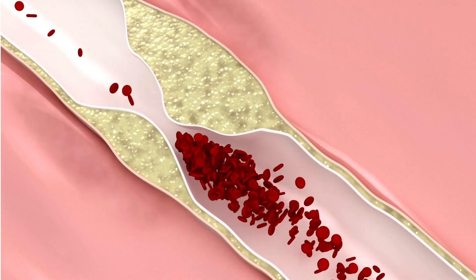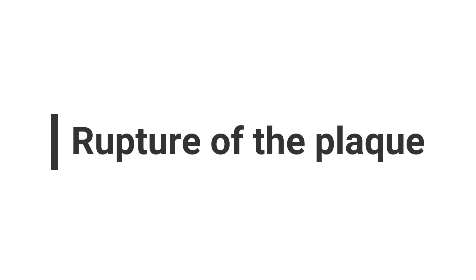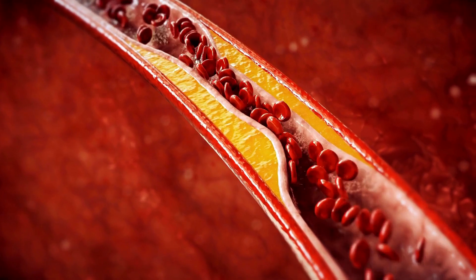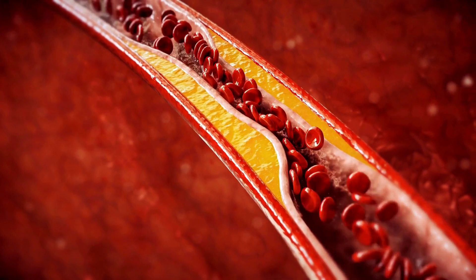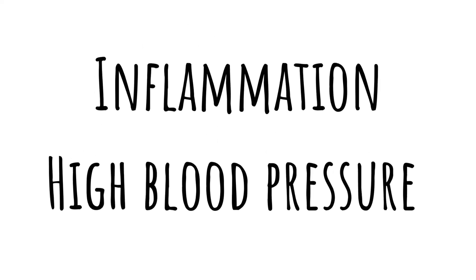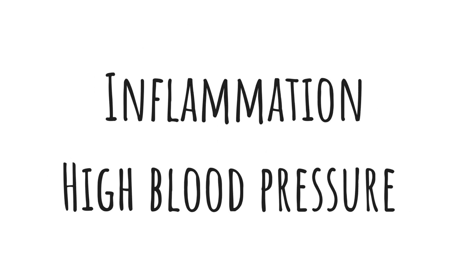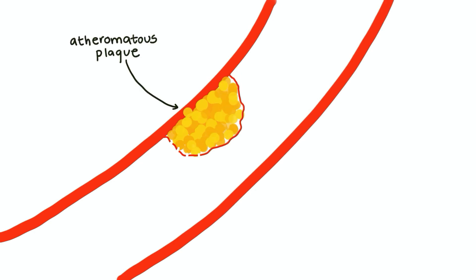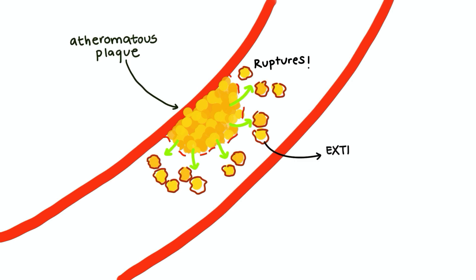Number two: plaque rupture. Plaques can become unstable and rupture due to inflammation, high blood pressure, or other factors. When a plaque ruptures, the contents inside — including cholesterol, platelets, and other substances — are exposed to the bloodstream, and this is highly thrombogenic.